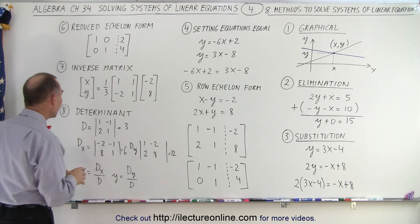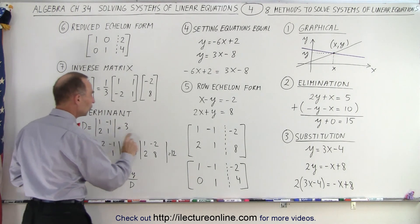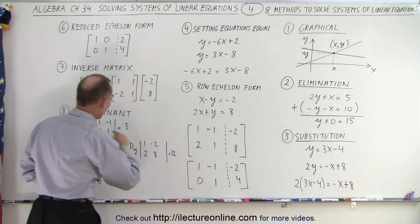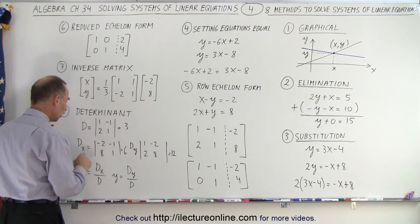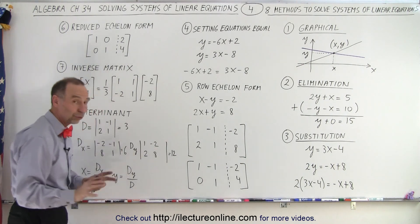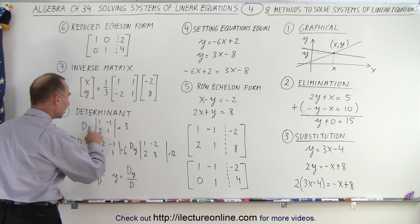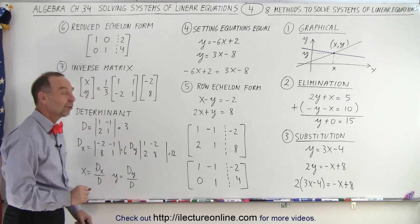And finally, we can use the determinant method. Here you can see the definition of the determinant. We use these coefficients of x and y to calculate the determinant. We then get d sub x and d sub y using a similar technique, and we'll show you how to do that. And then we simply take d sub x divided by d and d sub y divided by d to get the values for x and y.